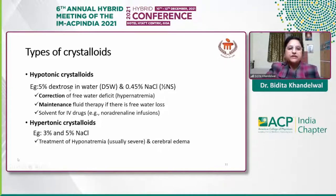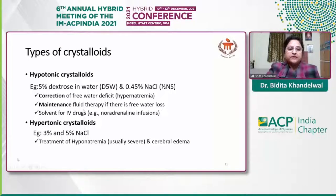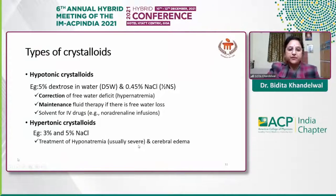The hypotonic crystalloids — 5% dextrose in water and half-normal saline — are used for correction of free water deficit and maintenance of fluid therapy in free water loss. 5% dextrose is also used as a solvent for noradrenaline infusion. The hypertonic crystalloids, 3% and 5% NaCl, are mainly used for severe hyponatremia and treatment of cerebral edema.